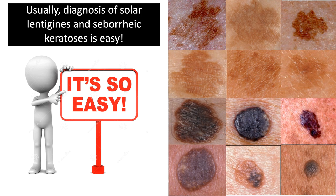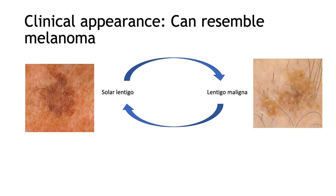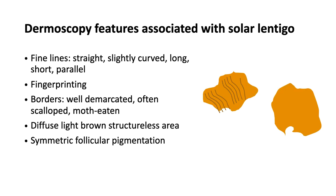Usually the diagnosis of solar lentigos and seborrheic keratosis is easy by the naked eye alone, but sometimes it's very challenging and we need dermoscopy to avoid doing biopsies. The clinical appearance of solar lentigo can resemble melanoma, mainly of the lentigo maligna type, but with dermoscopy we can easily see features that can help differentiate between seborrheic keratosis and lentigo maligna.